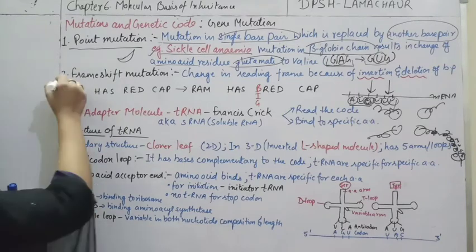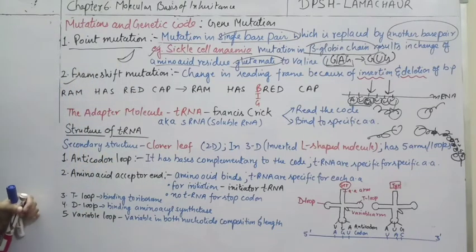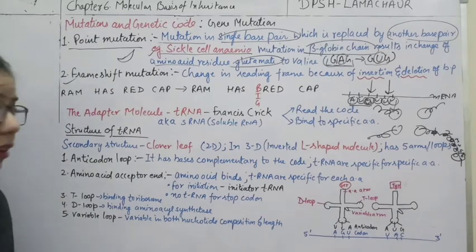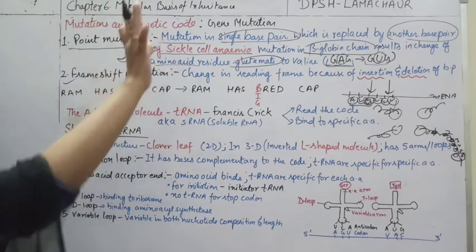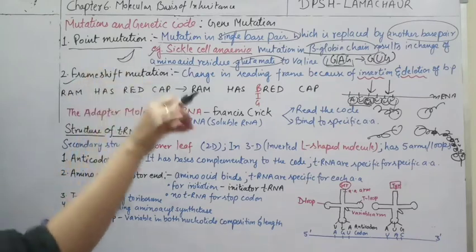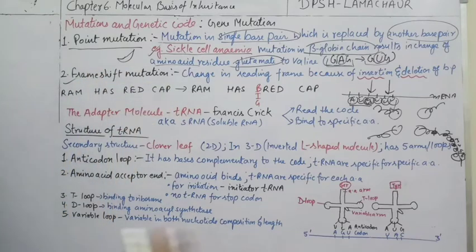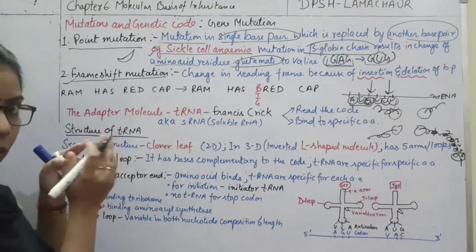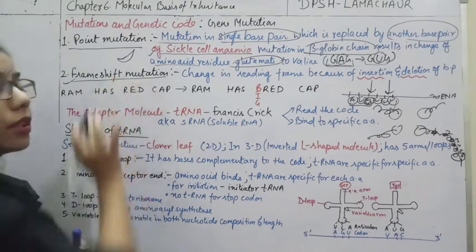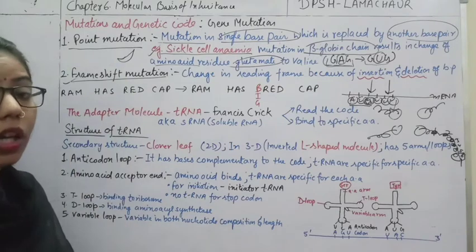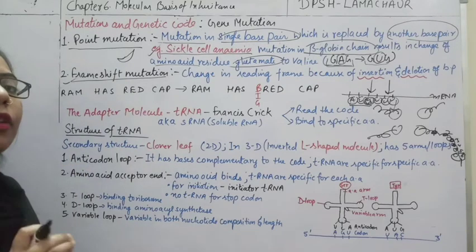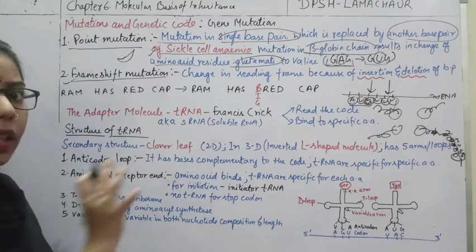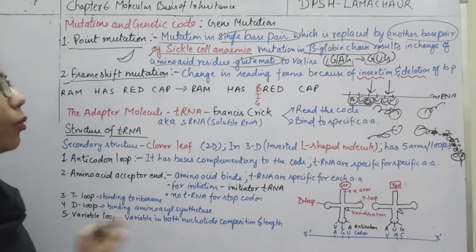Another type of mutation is frame shift mutation. This mutation can be of two types and it happens at the gene level. In frame shift mutation, there is a change in the reading frame. If I have to write 'hat' and I change the 'a' to 'o', it becomes 'hot' — the whole meaning changes. Just like one spelling error changes the meaning completely.